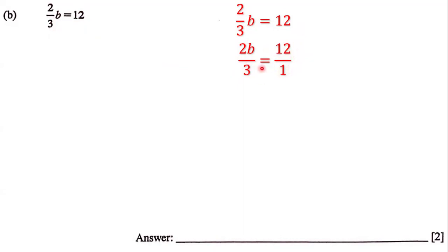And so here in order to answer this question we're going to cross multiply. We multiply 1 by 2b and we multiply 3 by 12. 1 times 2b is simply 2b and 3 times 12 is 36.